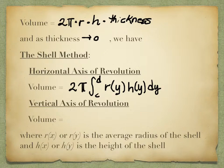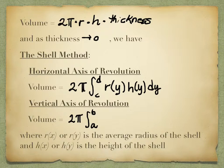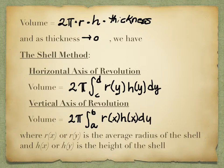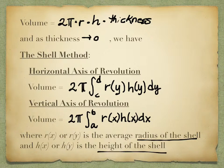When we do the volume for a vertical axis of revolution, we're going to do it in terms of x. We use a and b as our limits of integration — different values than c and d. Our radius will be in terms of x, our height will be in terms of x, and our thickness will be dx. So r(x) or r(y) is the radius of the shell, and h(x) or h(y) is the height of the shell.